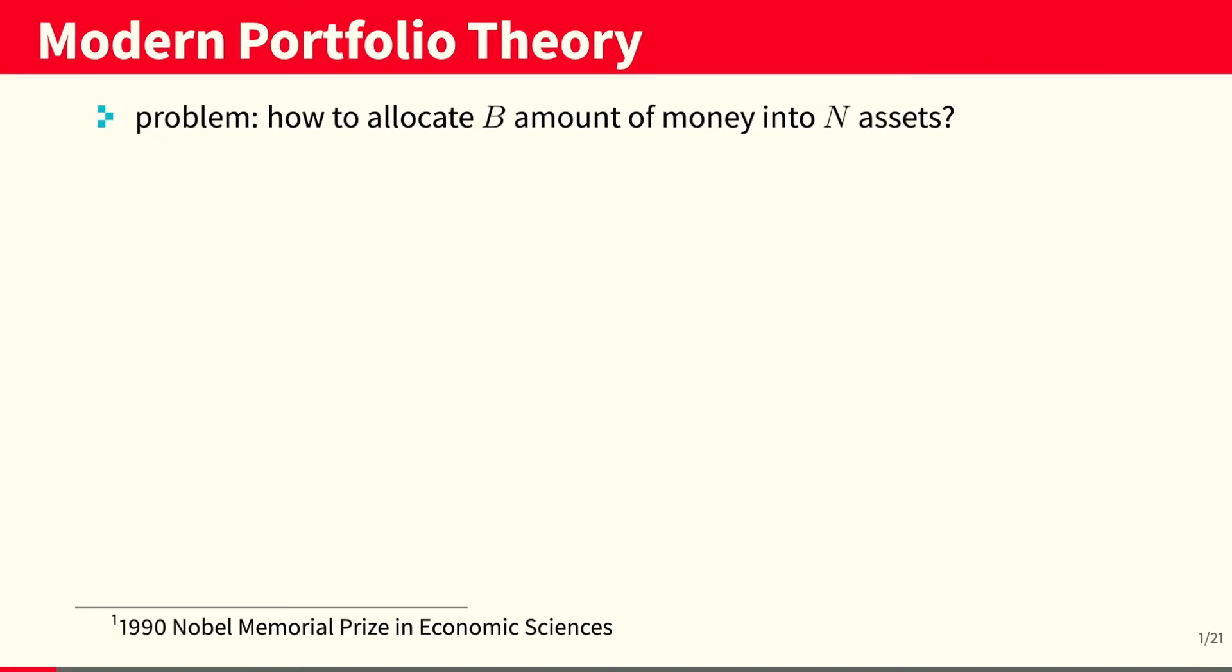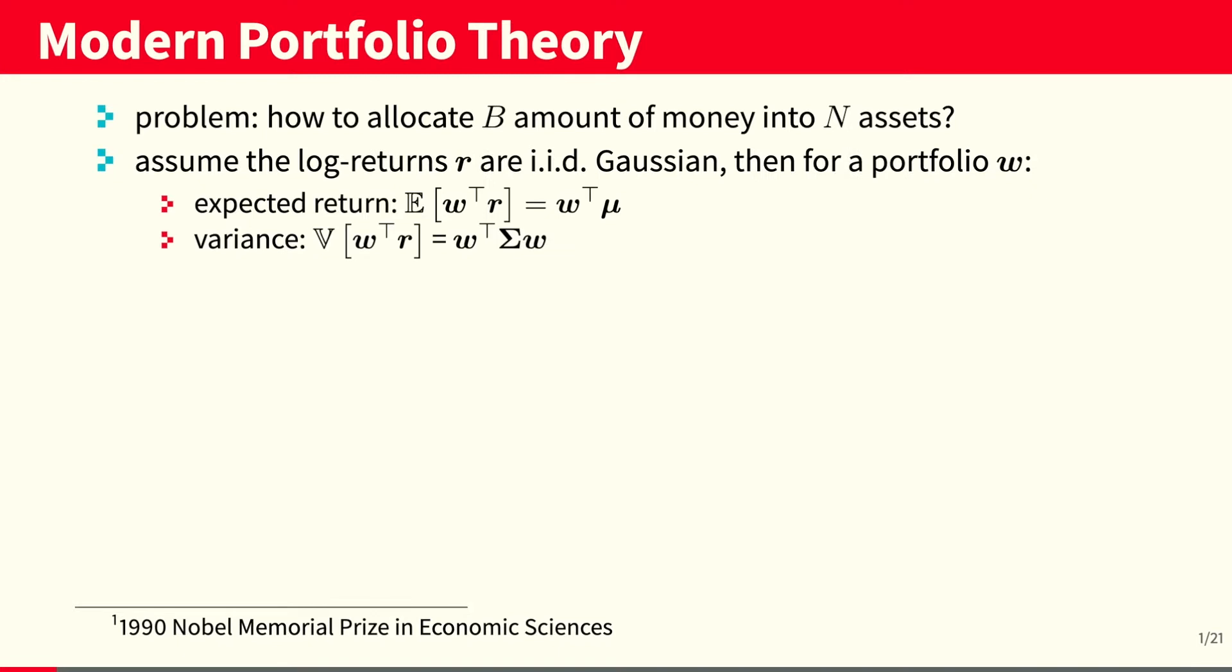Modern portfolio theory seeks to find an answer to the following question: How do we allocate a given amount of money into N assets? If we assume that the log returns R of these stocks are given IID Gaussian, then for a portfolio w, we have the following properties. Its expected return and variance are given as follows, where mu and sigma are respectively the expected return of the stocks and the covariance matrix.